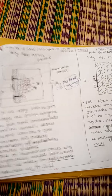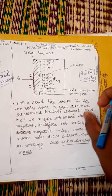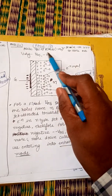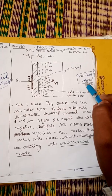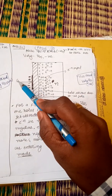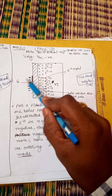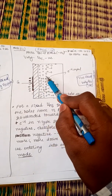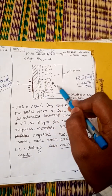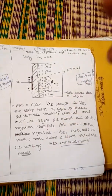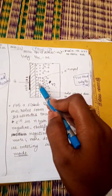Third case: keep VDS fixed and vary Vgs by making gate negative. Once you make gate negative, what happens in N-type material — the majority carriers are holes.